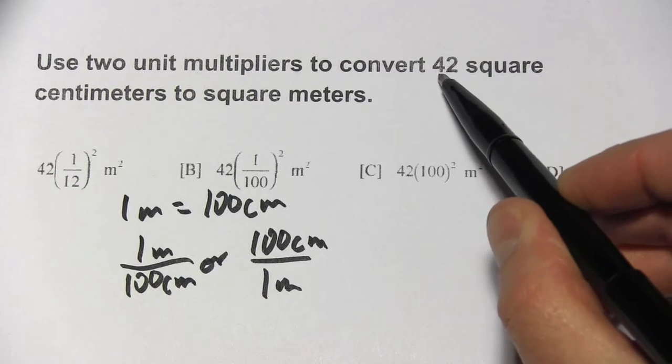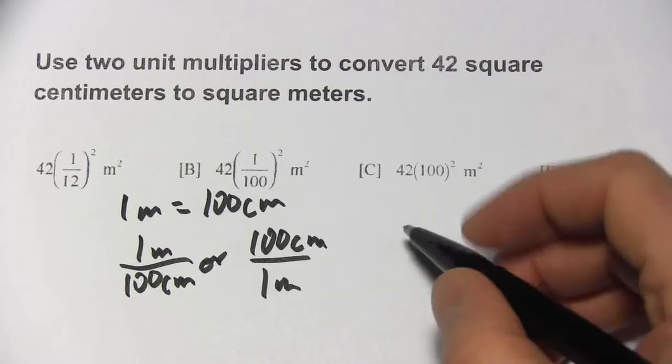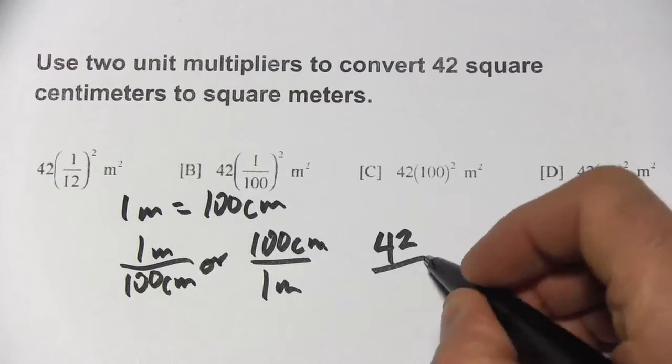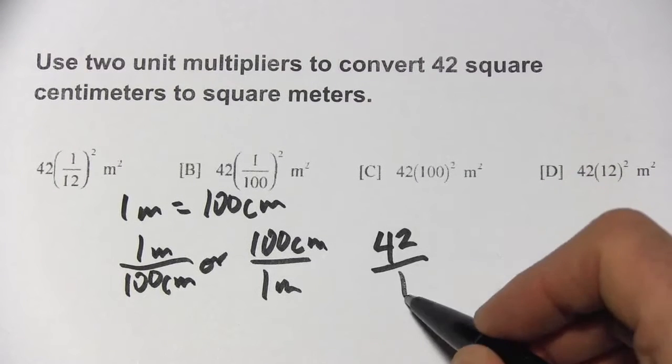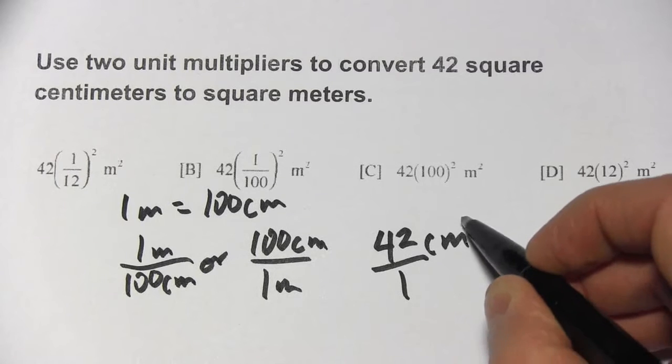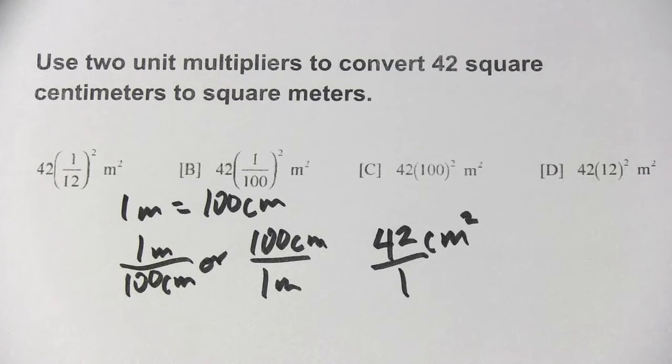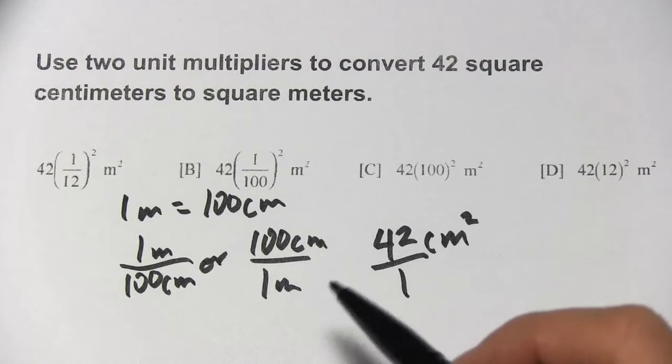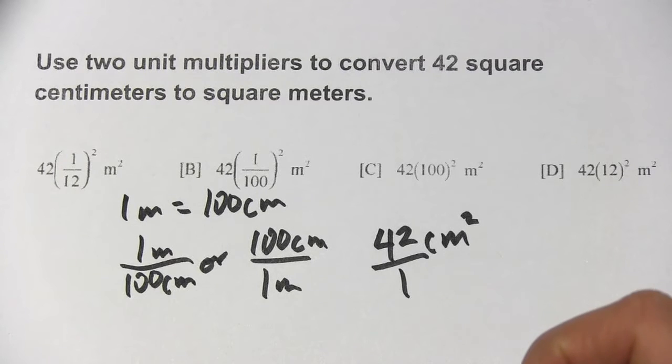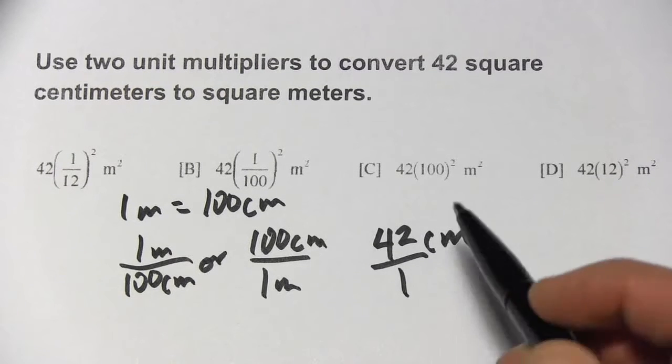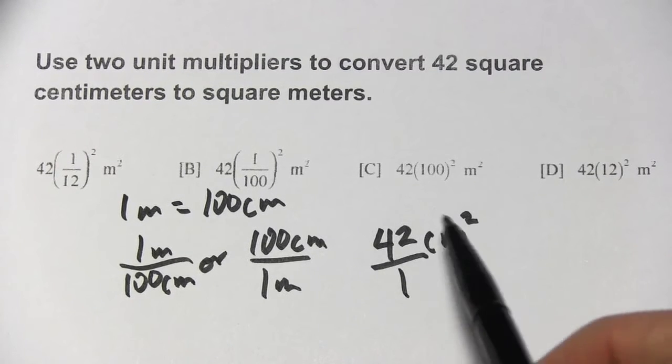Let's set up the problem. We start with 42 square centimeters. So 42, and I'm going to write that as a fraction. So 42 over 1, and the units are centimeters squared. Now we need to multiply this by one of these unit multipliers.